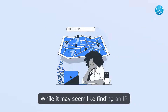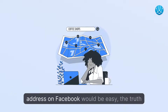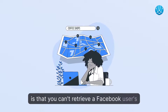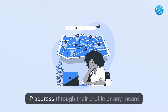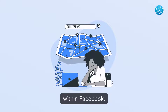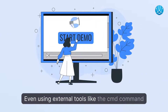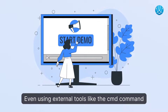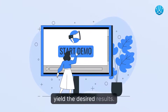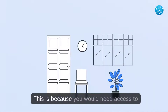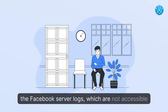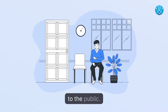While it may seem like finding an IP address on Facebook would be easy, the truth is that you can't retrieve a Facebook user's IP address through their profile or any means within Facebook. Even using external tools like the CMD command prompt or a Facebook Live location tracker won't yield the desired results. This is because you would need access to the Facebook server logs, which are not accessible to the public.